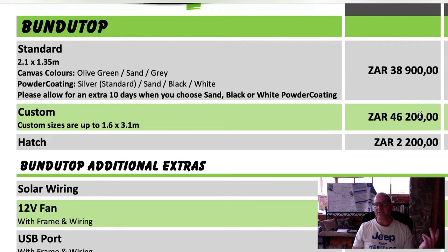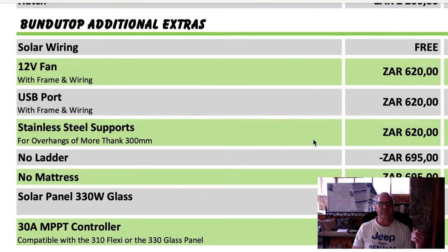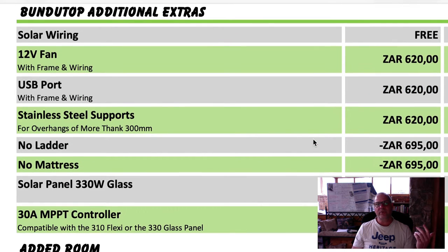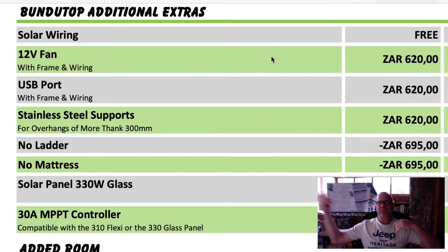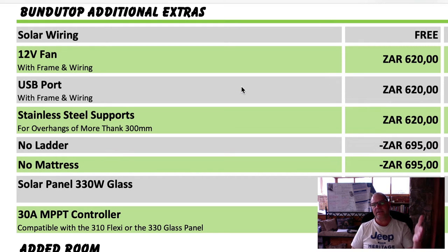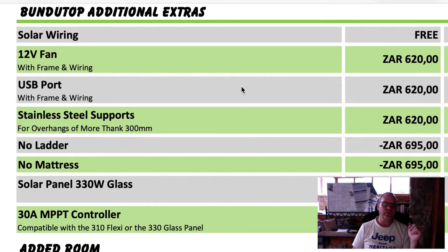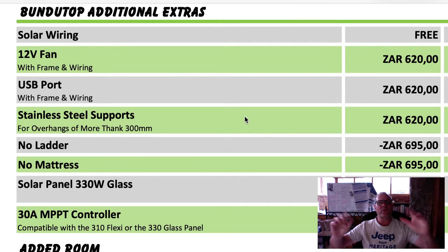The standard price is R38,900. Custom sizes are available and the price goes up to R46,200. For extras on the Bundutop: a fan is R620, which sits built into the top of the roof with a hi-and-low switch. If you have two fans you can do that as well. A USB port or cigarette lighter port is also available - your choice.